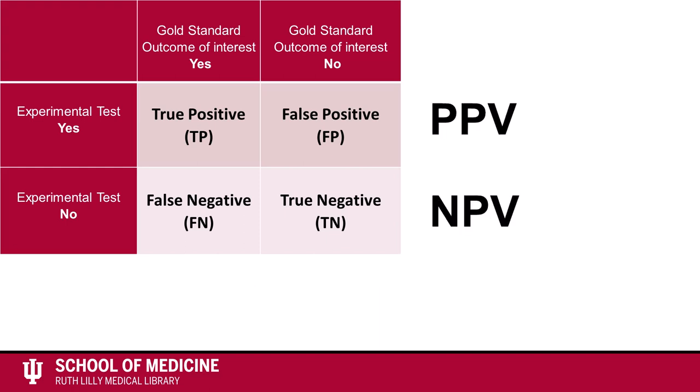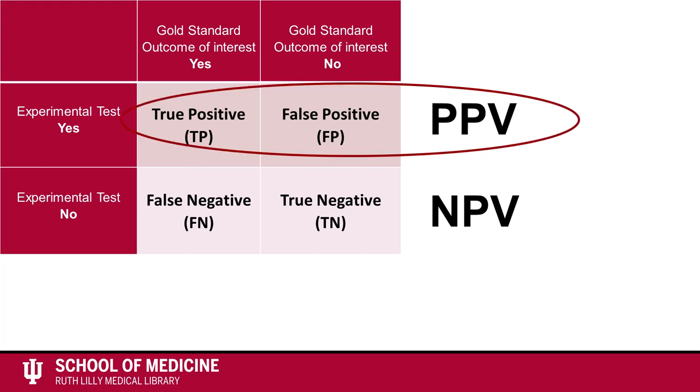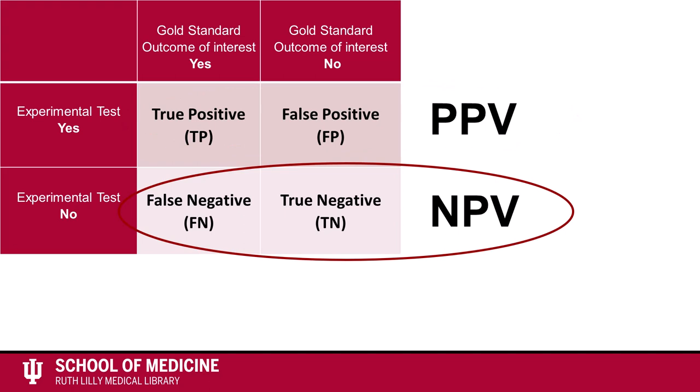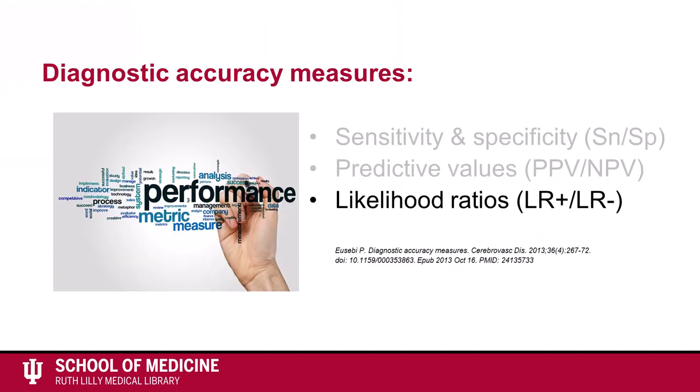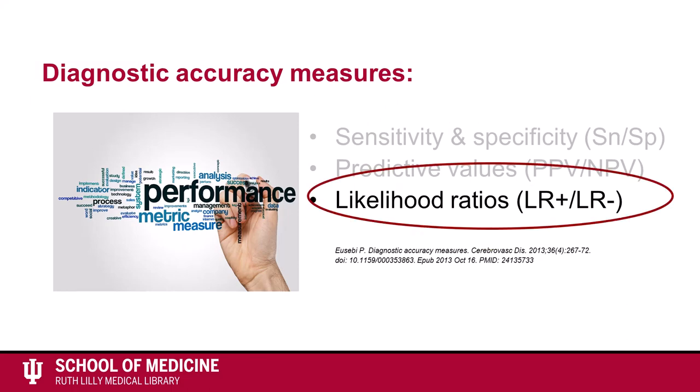To help you remember how to calculate predictive values, on a 2x2 table, use all of the positive results to calculate the PPV and all of the negative results to calculate the NPV. In the next video, we will discuss the diagnostic accuracy measure likelihood ratios.